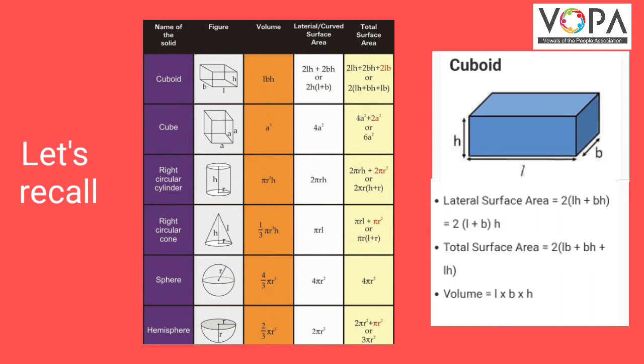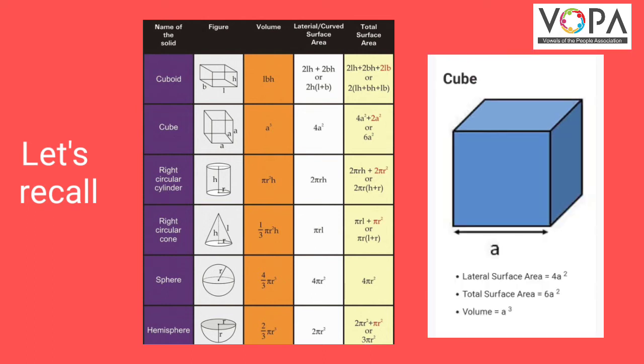The next object is a cube. A cube has all sides equal, so its lateral surface area is equal to 4a², where a is the side length. The total surface area is equal to 6a², and the volume is equal to a³.